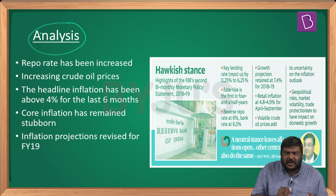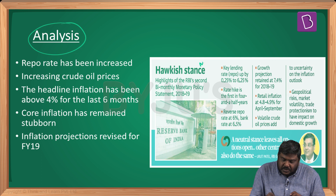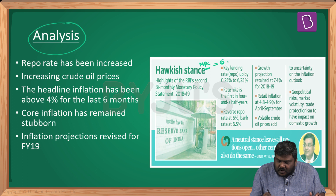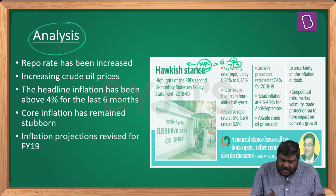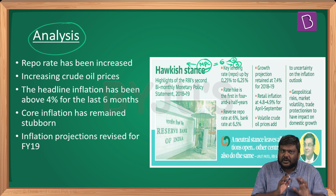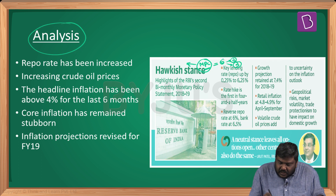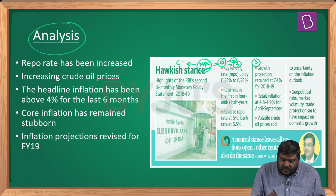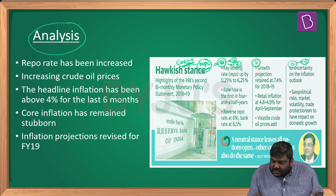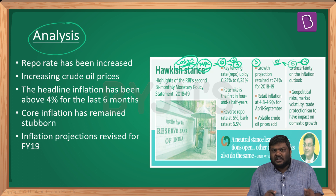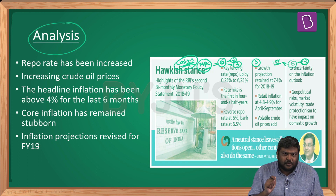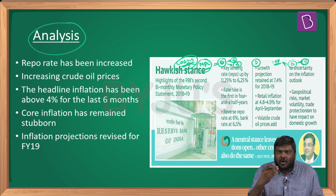The monetary policy committee has a composition of six members — three from RBI and three experts appointed by the Government of India. Two important differences exist between the old and new MPC: first, the new MPC has six members versus five in the old MPC. Second, in the new MPC, the RBI governor has a casting vote — meaning in case of a tie among the six members, the governor gets one extra vote. In the old MPC, the governor had a veto power, where the governor's decision was binding on all members.